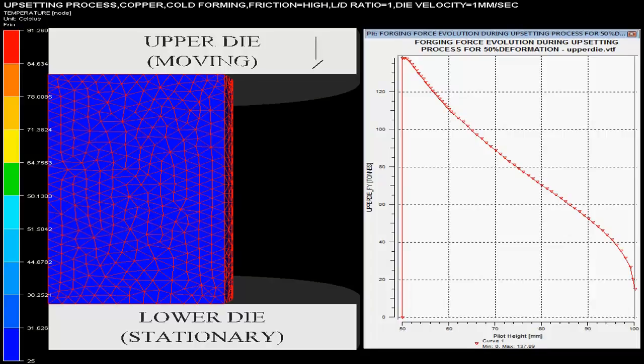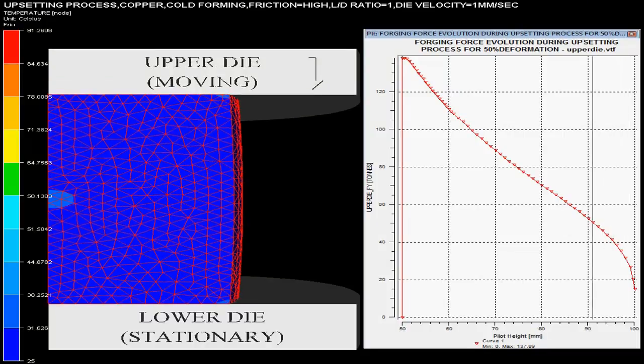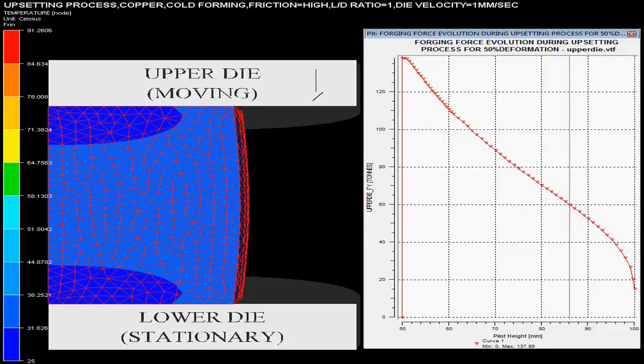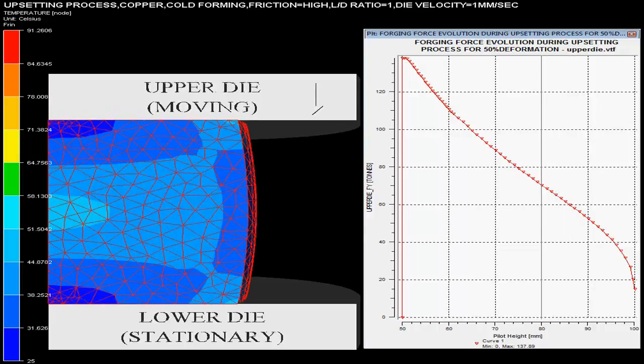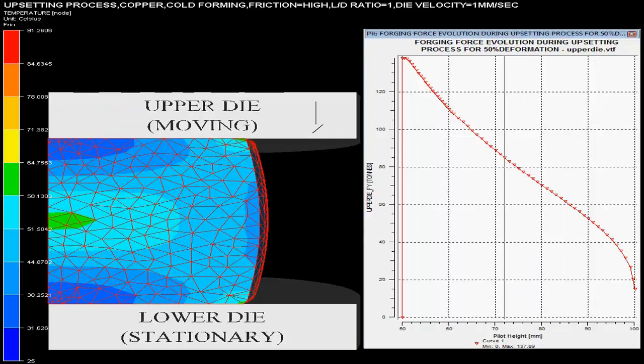On the right hand side one could see the graph of forging force on upper die versus billet height, showing the forging force evolution during upsetting process for 50% deformation.